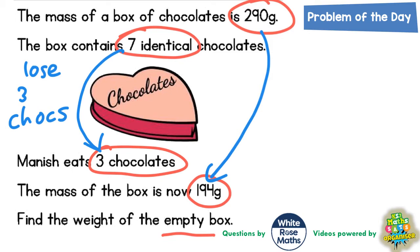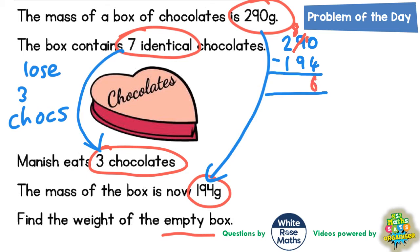So we are going from 290 down to 194. If we start with 290 and subtract the 194, we will know how much those three chocolates that we have just lost weigh. So: 0 take away 4 we can't do, so borrow from the 9 — the 9 becomes an 8 and the one we borrowed turns 0 into 10. 10 take away 4 is 6. 8 take away 9 we can't do, borrow from the 2 — it becomes a 1, and the one we've just borrowed makes the 8 into 18. 18 take away 9 is 9, and 1 take away 1 is 0. So that leaves us with 96 grams.